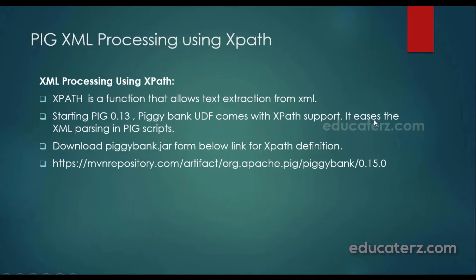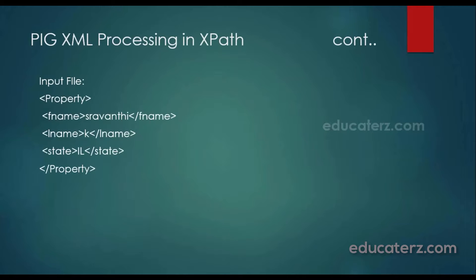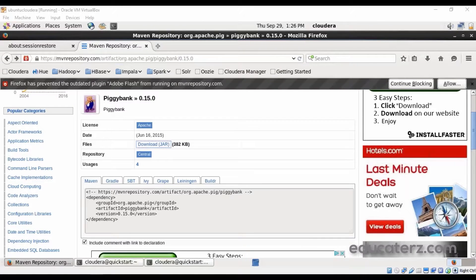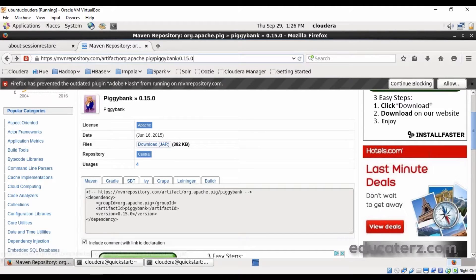The file piggybank-0.15.0.jar is what gets downloaded. Now we can directly use this, along with an input file — the property file consisting of multiple tags — and easily process those multiple tags with the help of XPath. First, let's register this piggybank.jar that was downloaded. Let me log into the Cloudera Quickstart VM and show you. Open the link to download the piggybank.jar, click the download jar option, and save the file in your downloads folder.